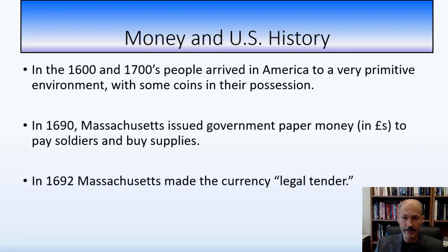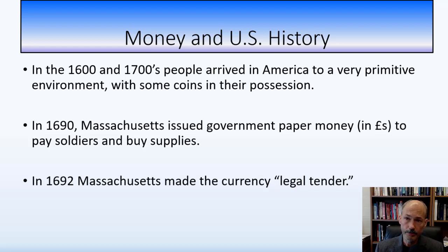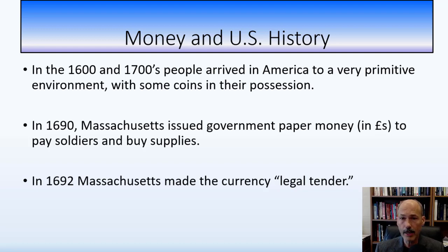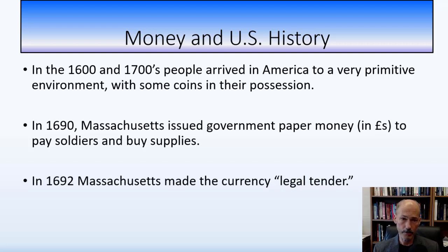In the 1600s and 1700s, people arrived in America to a very primitive environment. They had some coins for trade, but most trade was through barter. The problem with barter is you need a double coincidence of wants — if you have chickens and want beef, you have to find someone who has beef but also wants chicken. That's the double coincidence of wants, and it means you spend most of your time trying to find someone to trade with. Money would make transacting business so much easier.